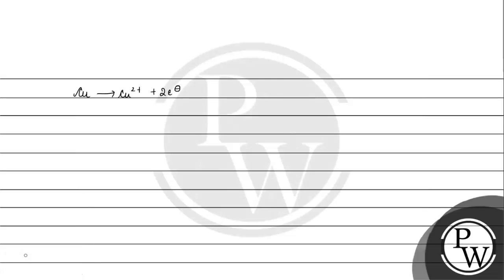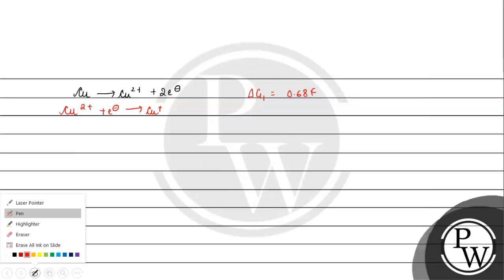So ΔG₁ came out to 0.68F. Then for the second reaction, Cu²⁺ to Cu⁺, ΔG₂ came out to -0.15F.